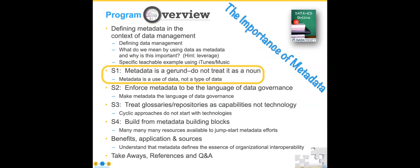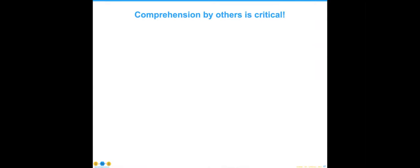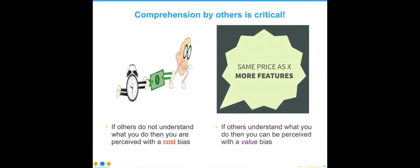Let's dive into the strategies. Those of you not familiar with English grammar: as Jesse said, comprehension by others is critical. If others do not understand what you do, then you are perceived as a cost to the organization — whereas if they do understand what you do, it's easier for them to understand the value.